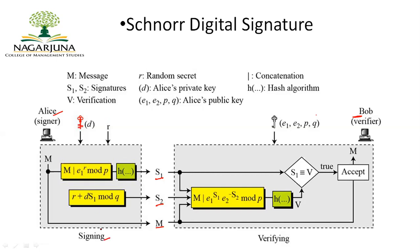There are two stages: the signing process and the verification process. In the signing process, the first thing Alice does is generate a digital signature s1 by applying a hash function to a message which has been concatenated — the vertical bar represents concatenation.